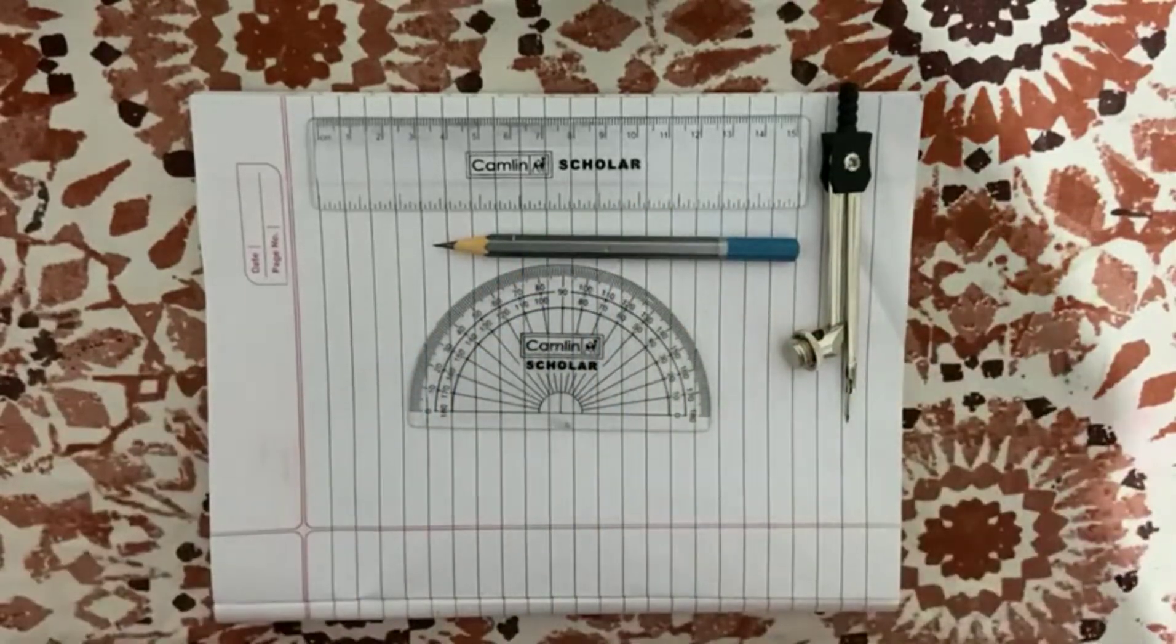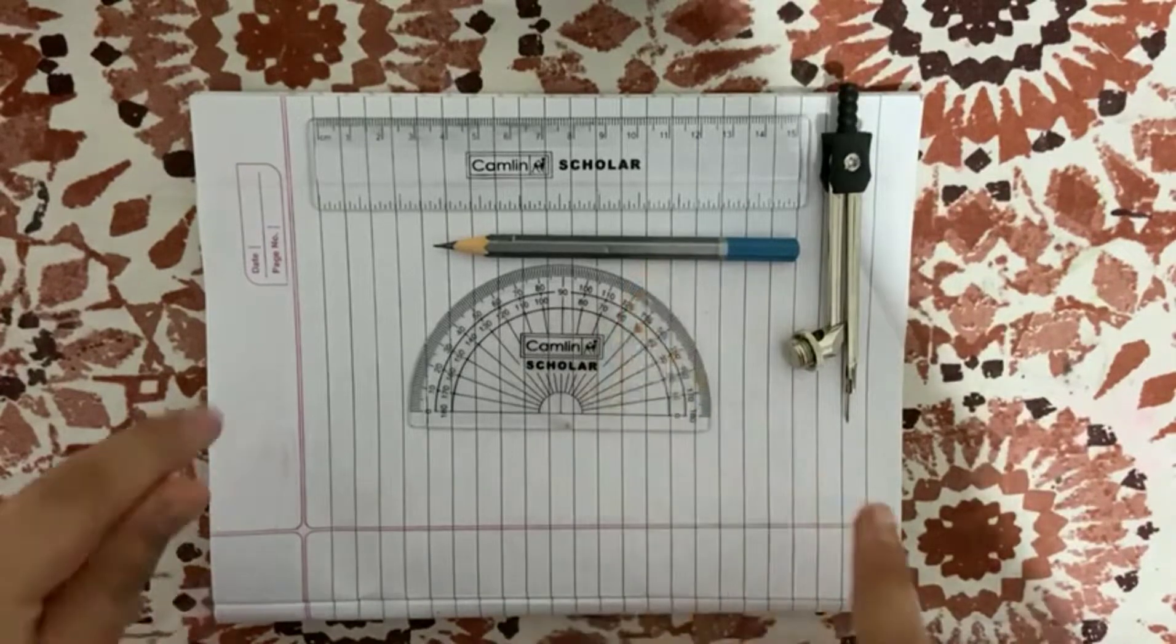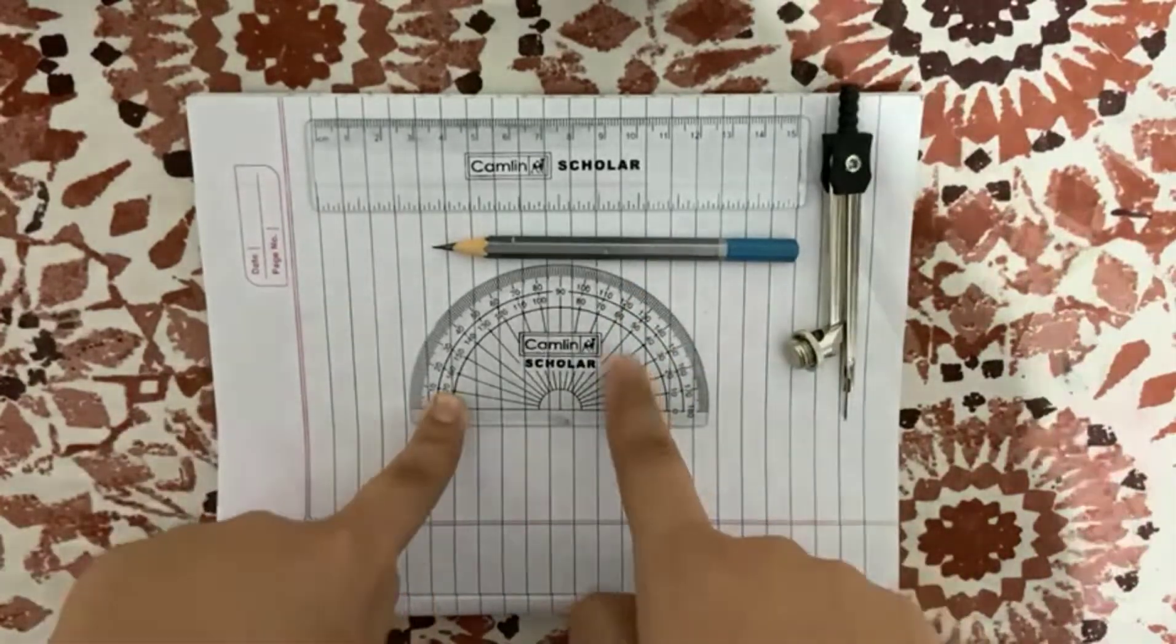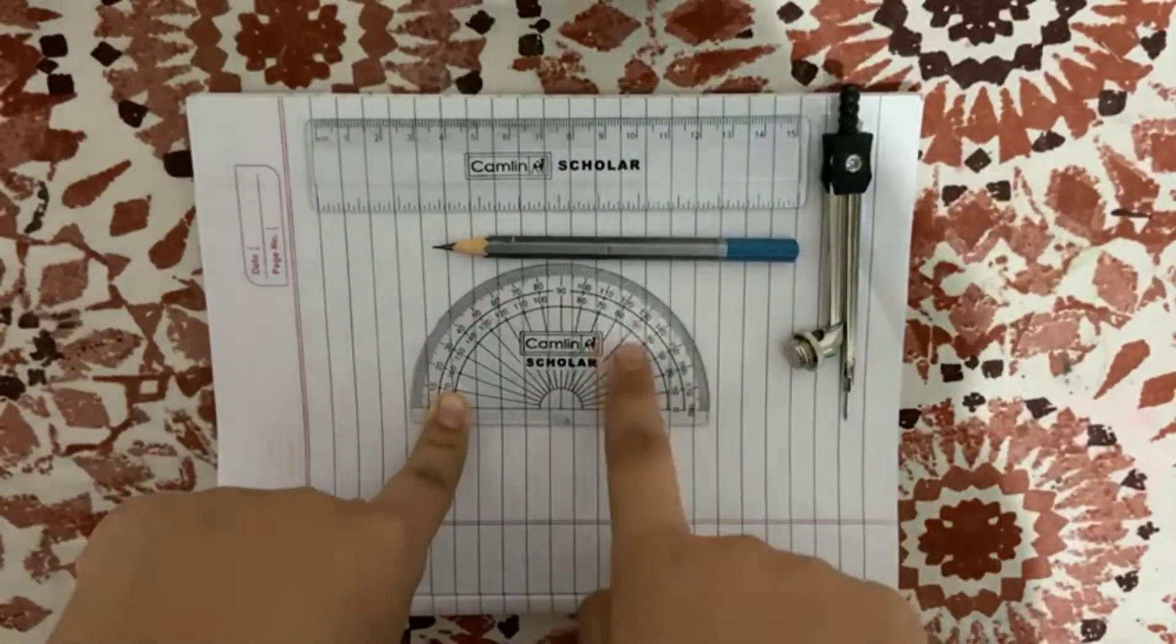The materials which we need are compass, pencil, a scale, and a protractor for the last part which is verifying if the angle is correct or not.